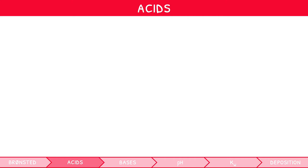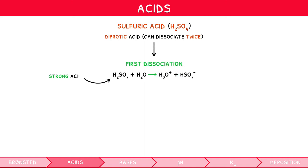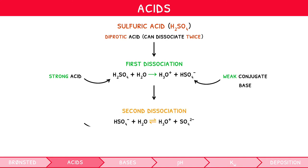A unique example worth discussing is sulfuric acid, H2SO4, which is considered a diprotic acid, i.e. it has two protons available and so can dissociate twice. During its first dissociation, it acts as a strong acid to form the weak conjugate base HSO4-. But during the second dissociation, this acts as a weak acid to form the strong conjugate base SO4-.